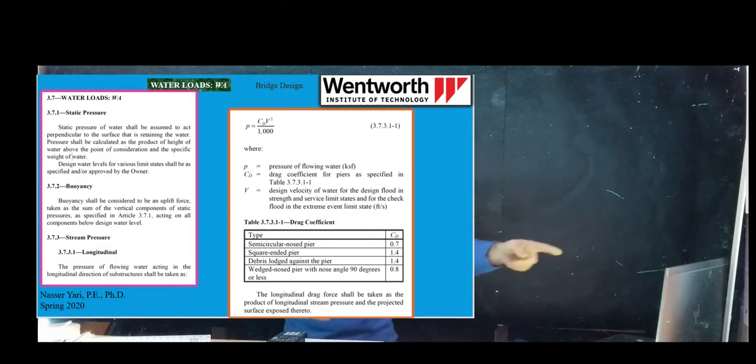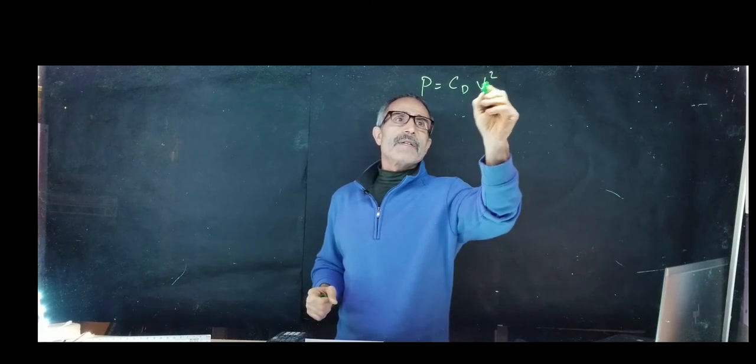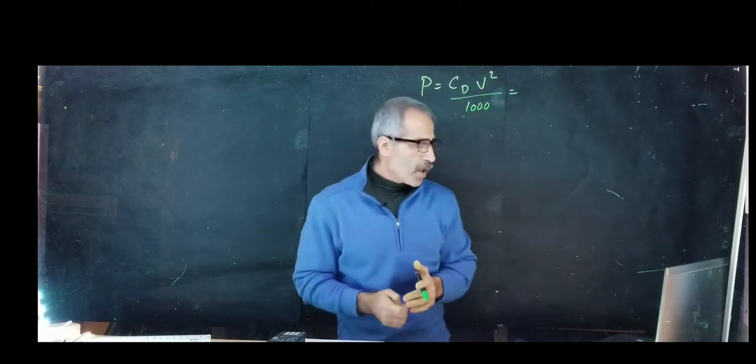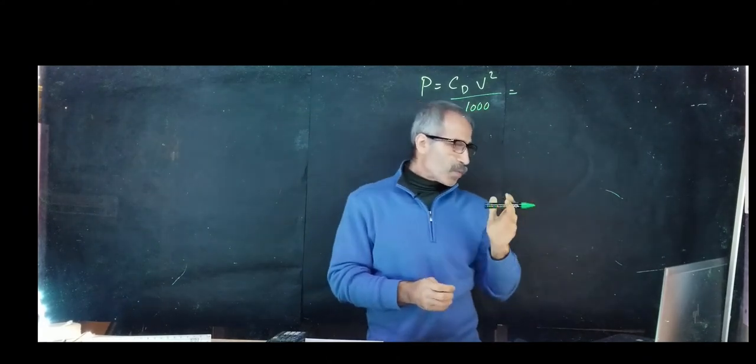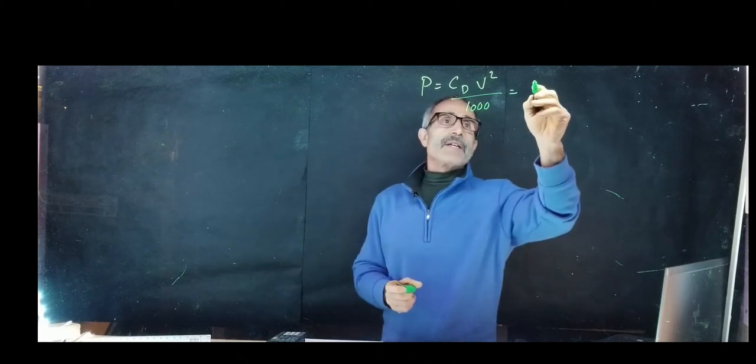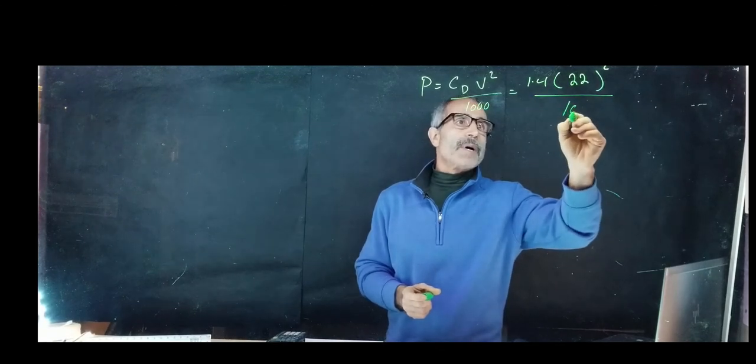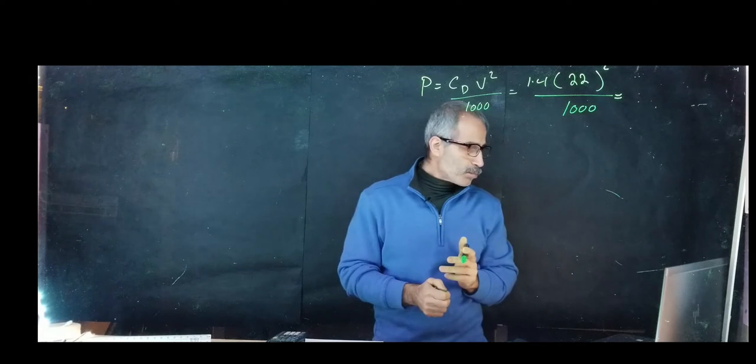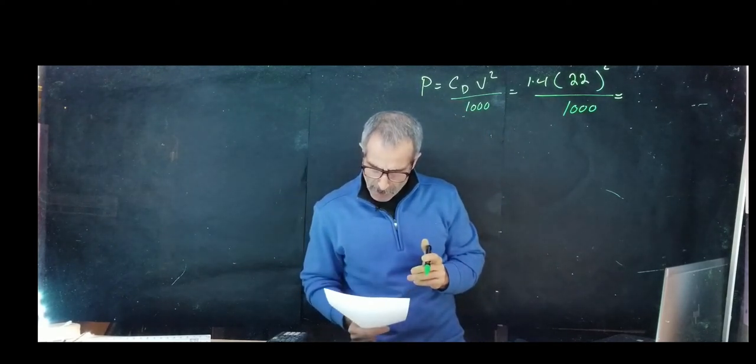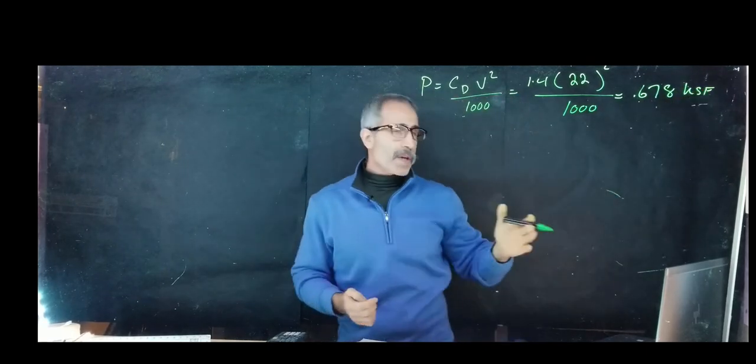If we use AASHTO 3.7.1, the equation is given as P = CDV²/1000. In this case, our drag coefficient is 1.4 as you can see from the board, and that is for a square-ended pier. Let's calculate this: 1.4 times 22 feet per second squared divided by 1000, which gives us 0.678 kip per square foot.